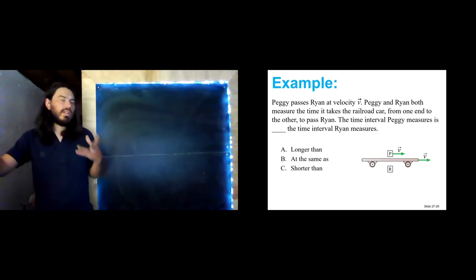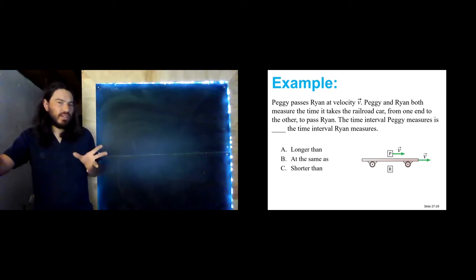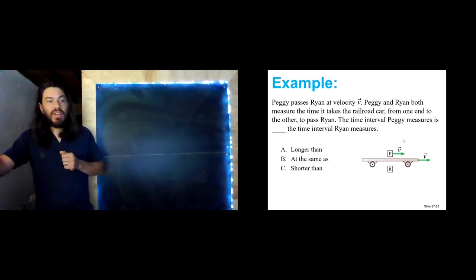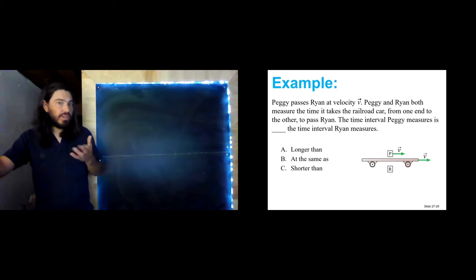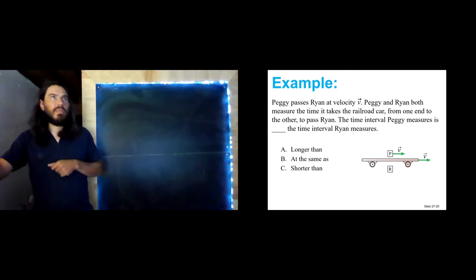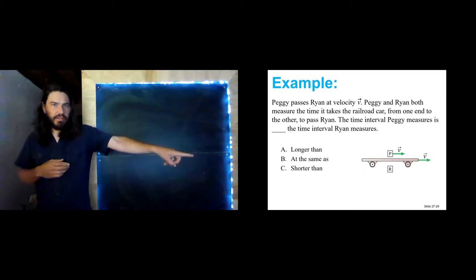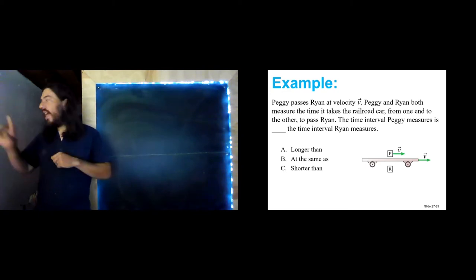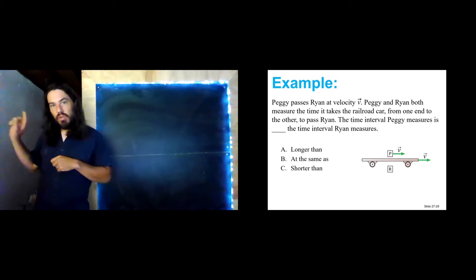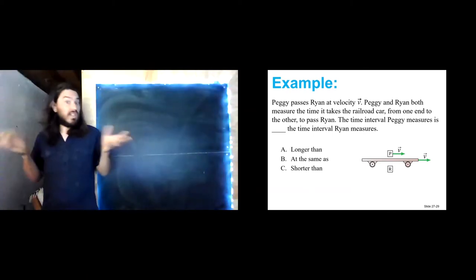First, identify the two events: the front of the railroad car passes Ryan, and the back of the railroad car passes Ryan. According to Peggy, who is on the railroad car, event one happens at the front of the car and event two happens at the back of the car — two different locations. So Peggy does not measure the proper time. Does Ryan? Ryan is standing on the ground — both the front and the back of the car pass him right there. Both events happen in the same location. Ryan measures the proper time.